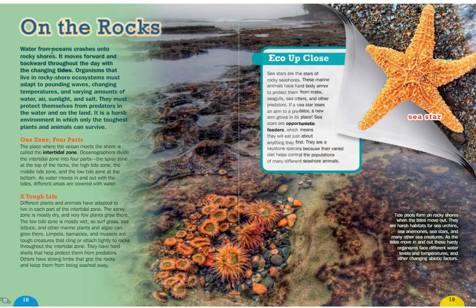On the rocks: water from oceans crashes onto the rocky shores, moving forward and backward throughout the day with the changing tides. Organisms that live in rocky shore ecosystems must adapt to pounding waves, changing temperatures, and varying amounts of water, air, sunlight, and salt. They must also protect themselves from predators in the water and on land. It is a harsh environment in which only the toughest plants and animals can survive.